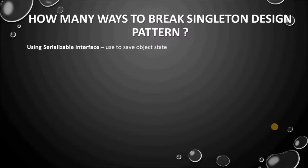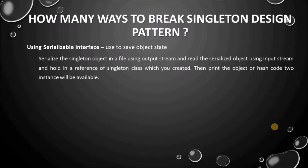Using the Serializable interface, which is used to save object state. Serialize the singleton object in a file using output stream, and read the serialized object using input stream and hold it in a reference to the singleton class you created, then print the object or hash code — two instances will be available.